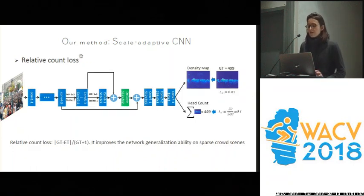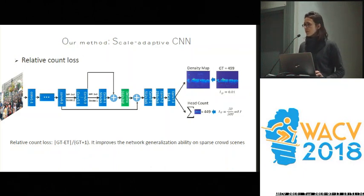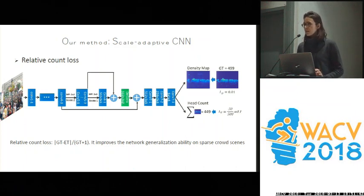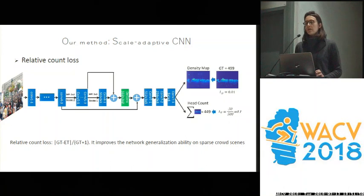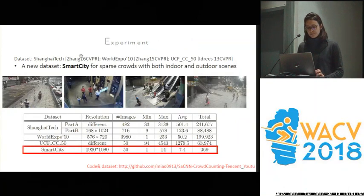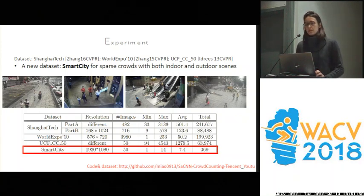They also introduce a new relative count loss, which is the relative error between the predicted count and the ground truth count. They found that this count loss helps a lot in sparse crowd images, as will be shown in the results. They also propose a new dataset called Smart City, which contains between one and 14 pedestrians per image.